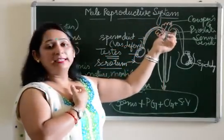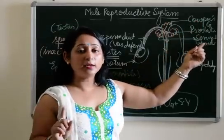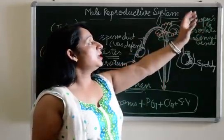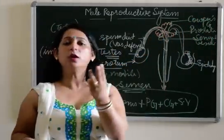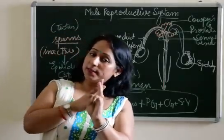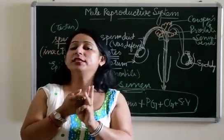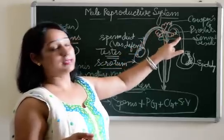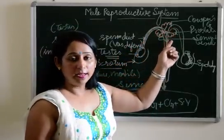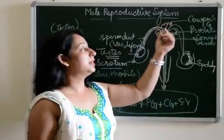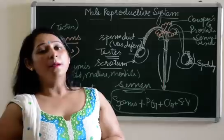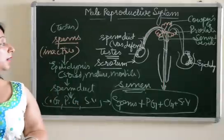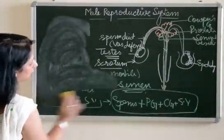The three accessory glands — Cowper's gland, prostate gland, and seminal vesicles — don't play any direct role in reproduction but assist the process. They pour their secretions, and their functions are to lubricate the sperms, provide energy to the sperms, and make the medium of semen alkaline. At this point the sperms mix with the secretions of these three glands and are finally passed out, and this secretion is known as semen.